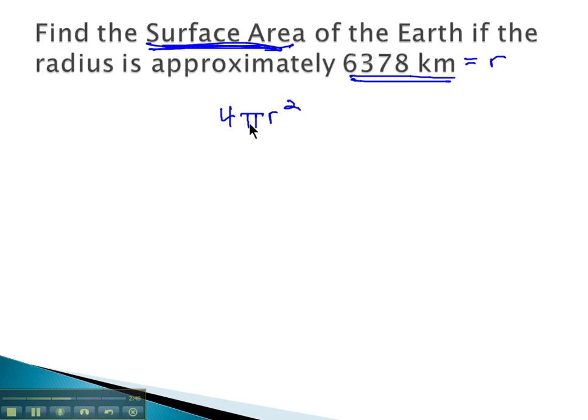So we'll plug that into our formula: 4 pi, 3.14, times the radius, 6,378 kilometers squared.